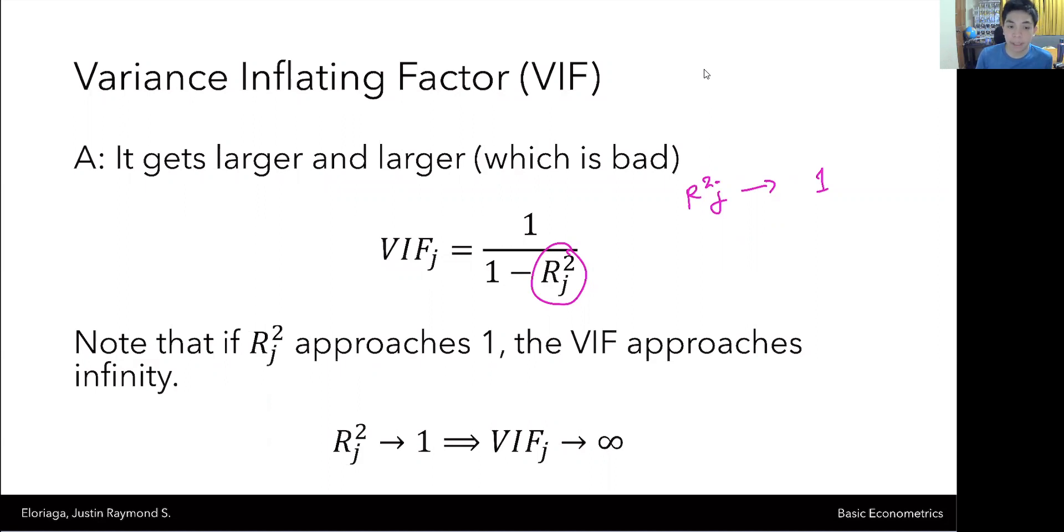Note that if the R squared sub J approaches 1, then the VIF will approach infinity. And that's bad. You wouldn't want a high variance inflating factor because it suggests that the degree of multicollinearity is indeed dangerous.